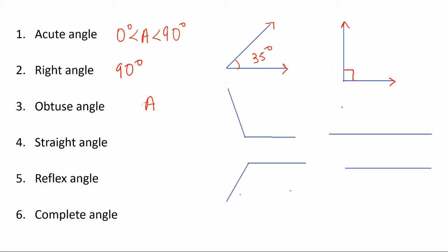The next type is the obtuse angle. An obtuse angle always lies between 90 degrees and 180 degrees — so it is always greater than 90 degrees and less than 180 degrees. For example, this angle could be 110 degrees, because 110 lies between 90 and 180.